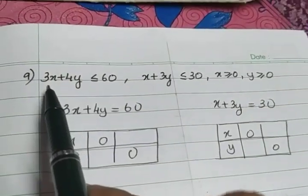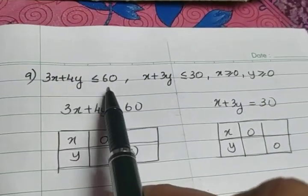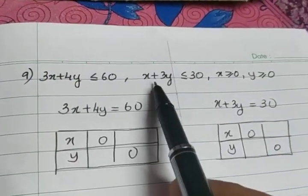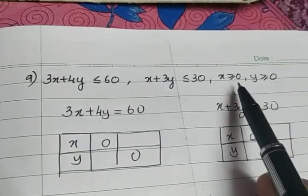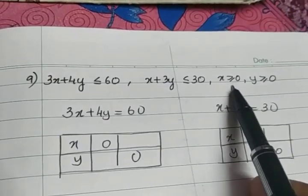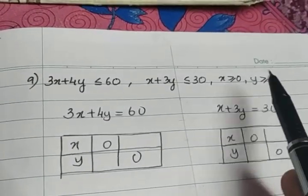The next inequalities given are: 3x plus 4y less than or equal to 60, x plus 3y less than or equal to 30, x greater than or equal to 0, and y greater than or equal to 0.